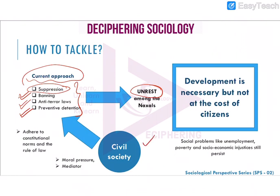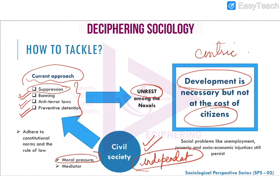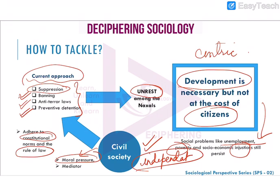What could be the solution? The role of civil society is important — civil society must step in and act as an independent mediator or negotiator, applying moral pressure on the Maoists. At the same time, the government should encourage development but not at the cost of citizens — the development should be citizen-centric. It should aim at the elimination of social problems like unemployment, poverty, and other injustices. Only then can civil society apply moral pressure on the Naxalites to abide by the rule of law and adhere to constitutional norms.